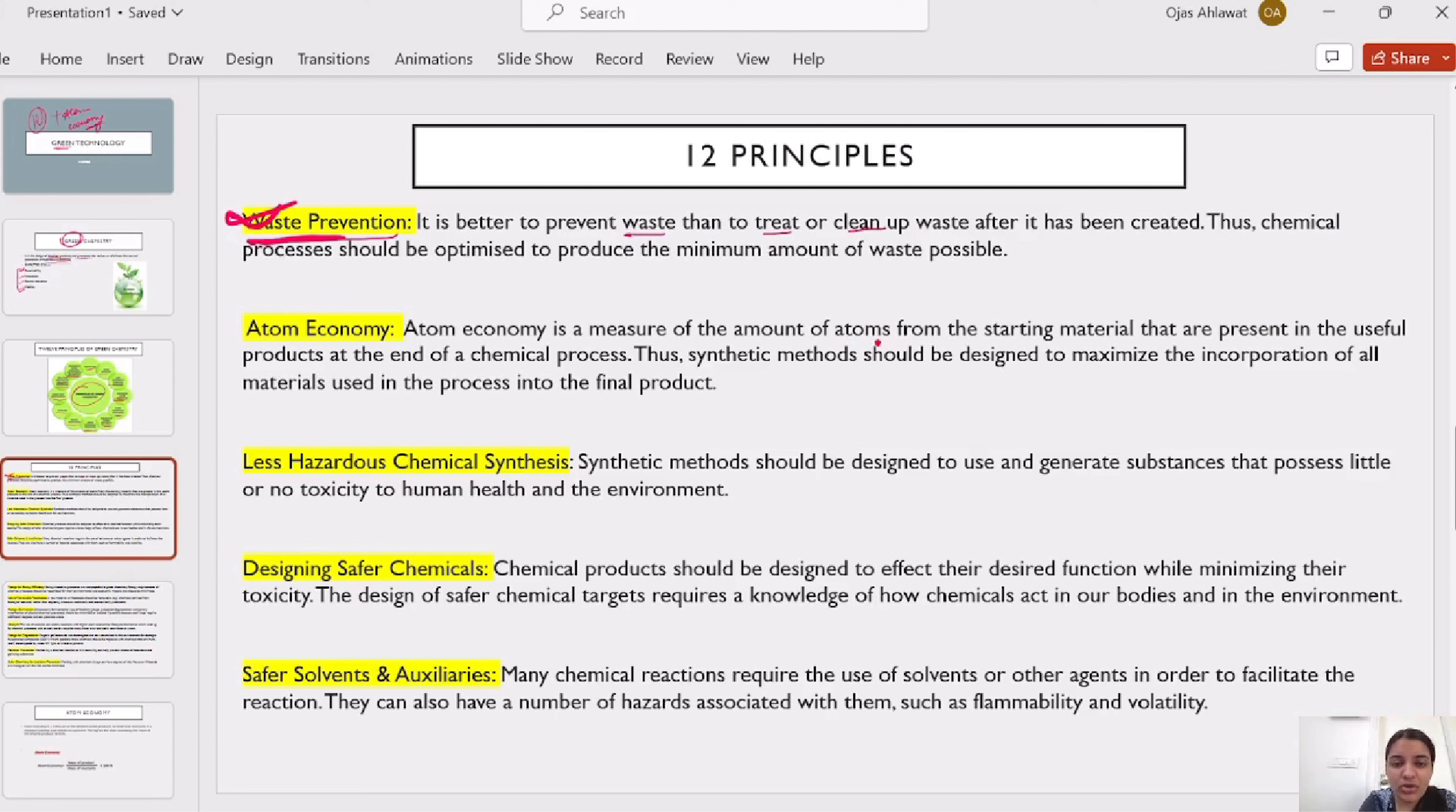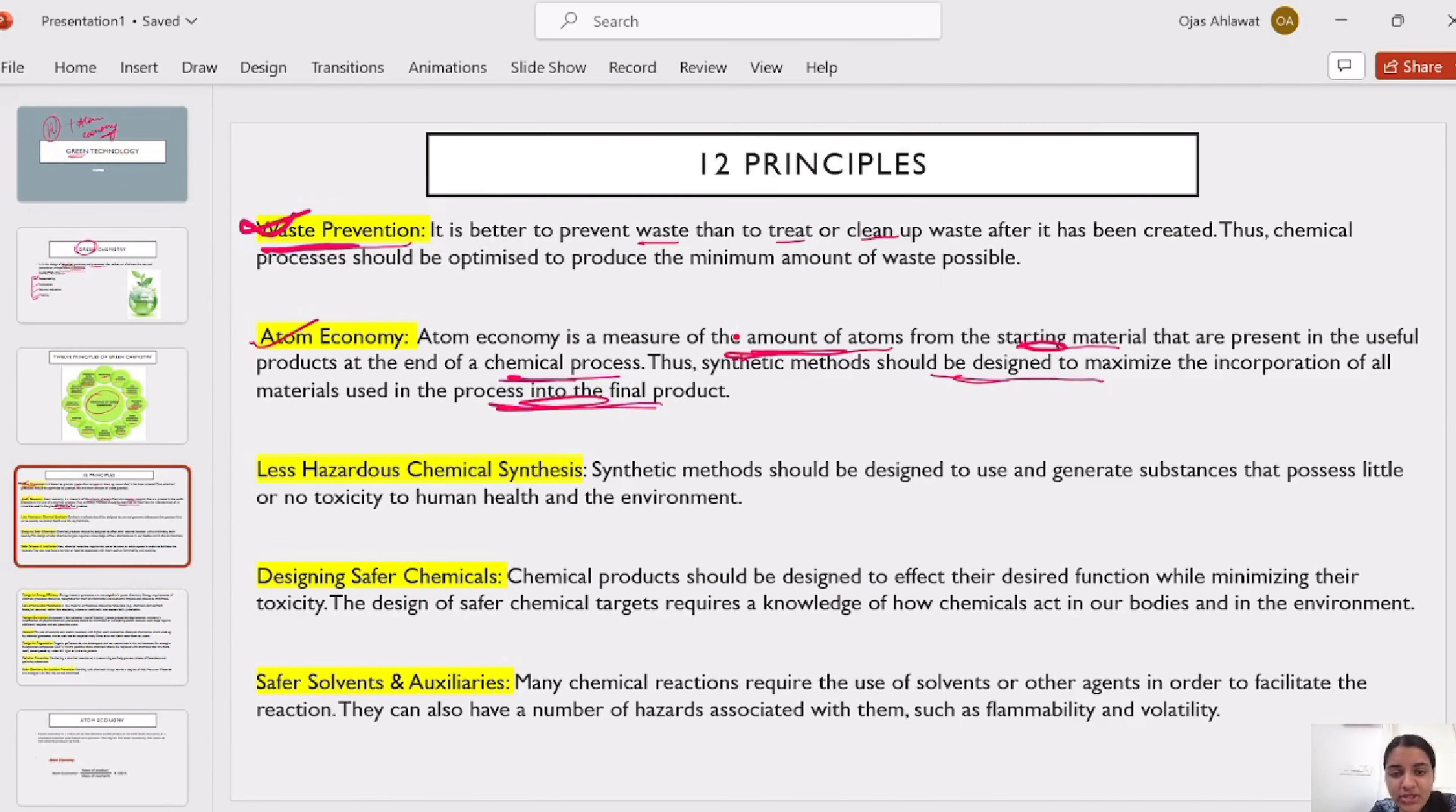It is a measure that the amount of atoms from the starting material at the end of the chemical process, how many children should be designed to maximize the incorporation material used into the final product. This is a measure that the amount of atoms from the starting material and the amount of atoms from the end of the chemical process. This is a measure of the atom economy.